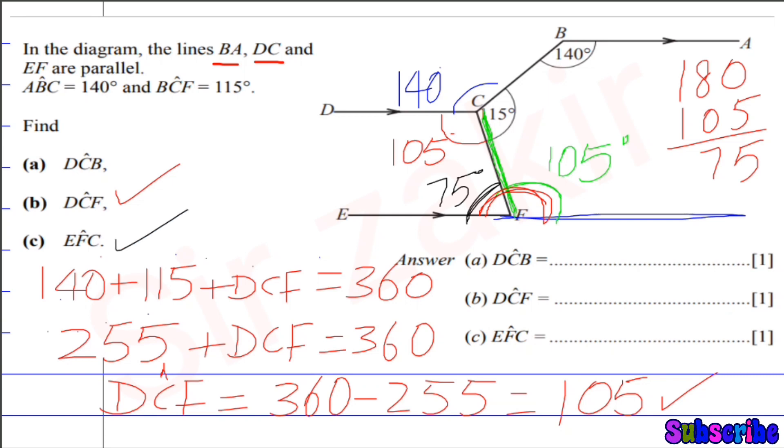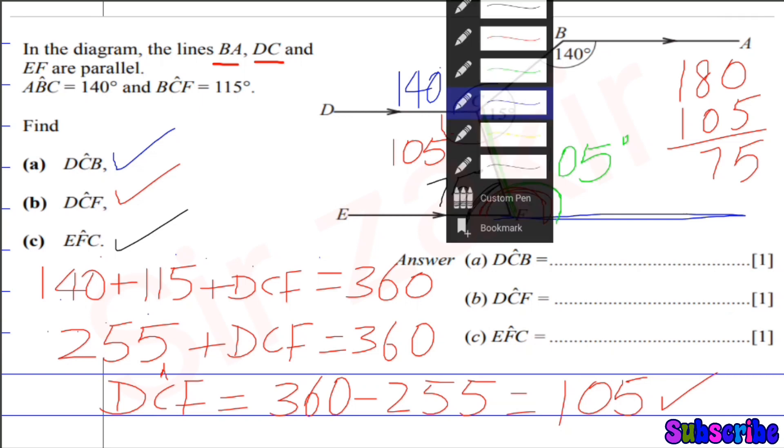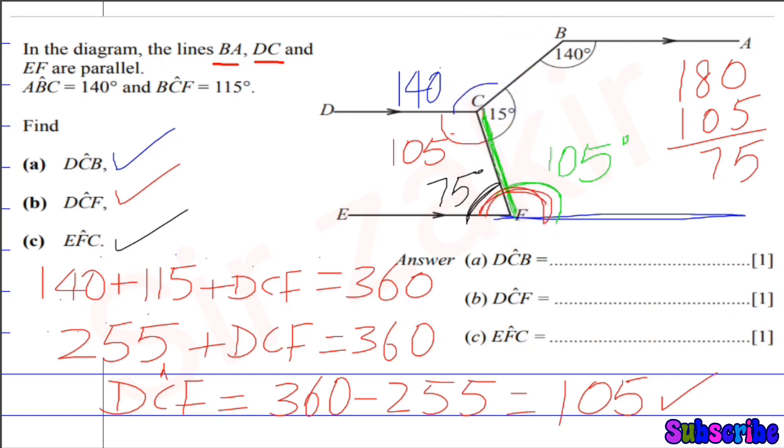So this is 75 degrees. We write all these answers here. So angle EFC is also calculated. DCB, we first evaluated 140 degrees. DCF, then we calculated 105 degrees. And EFC, last we calculated 75 degrees. So the answers are 140 degrees, next is 105 degrees, last is 75 degrees.